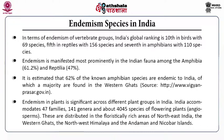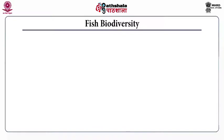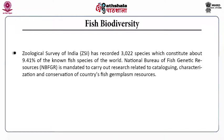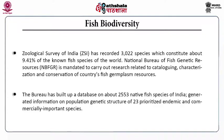Regarding fish biodiversity, the Zoological Survey of India (ZSI) has recorded 3,022 species, constituting about 9.41% of the known fish species of the world. The National Bureau of Fish Genetic Resources (NBFGR) — whose full form is important — is mandated to carry out research related to cataloguing, characterization and conservation of the country's fish germplasm resources. The bureau has built a database of around 2,553 native fish species of India and generated information on population genetic structure of 23 prioritized, endemic and commercially important fish species.